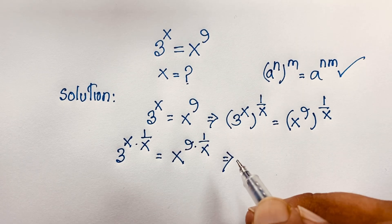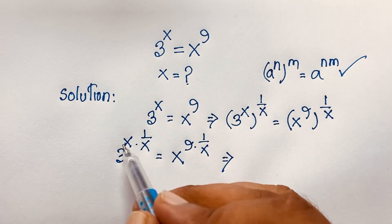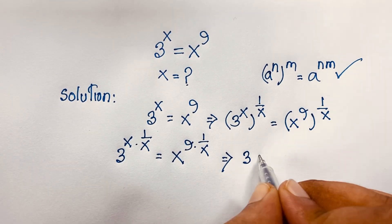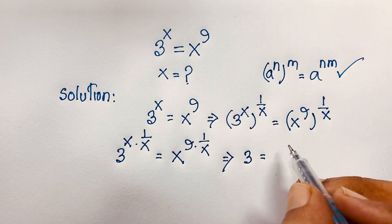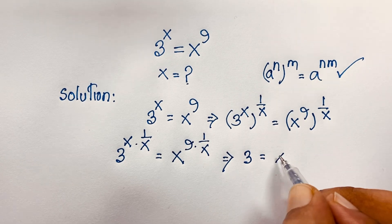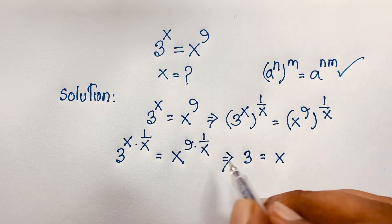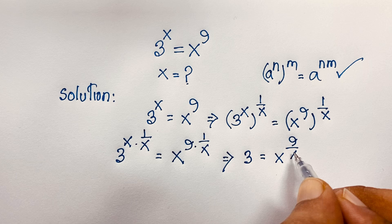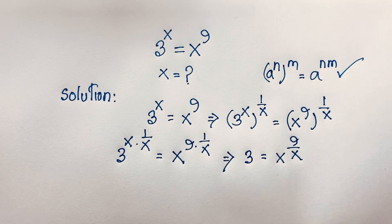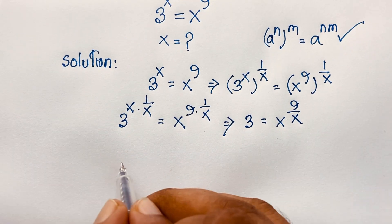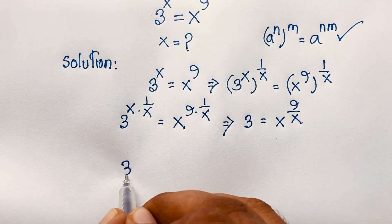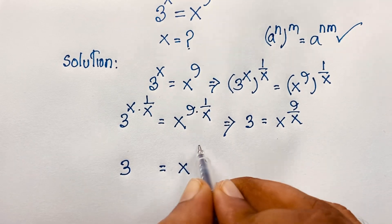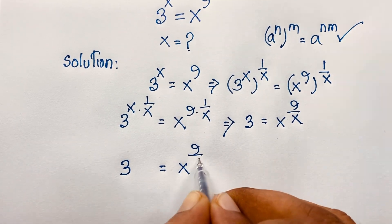You can see that the x in the exponent on the left cancels out, giving us 3. And on the right, 9 times 1 over x gives us the exponent 9 over x. So we have: 3 is equal to x to the power 9 over x.